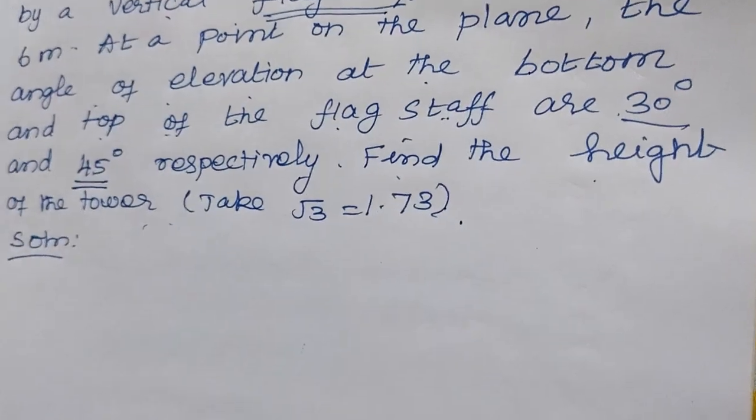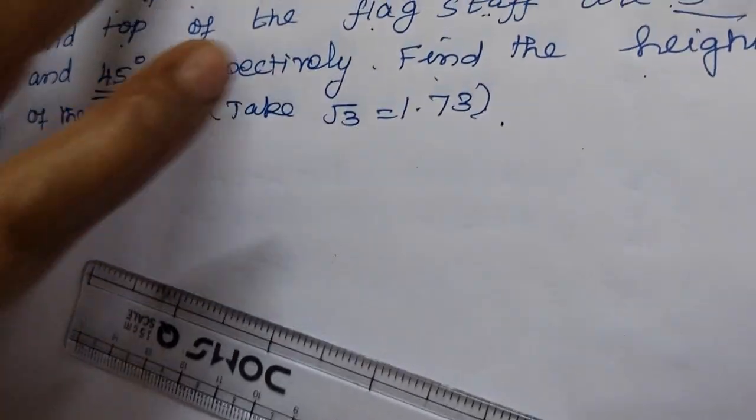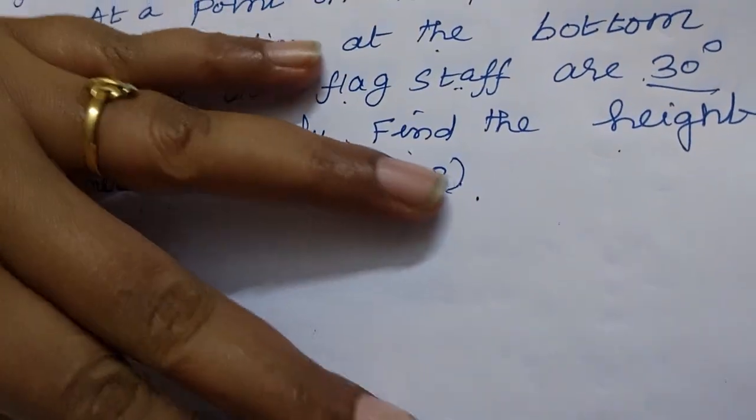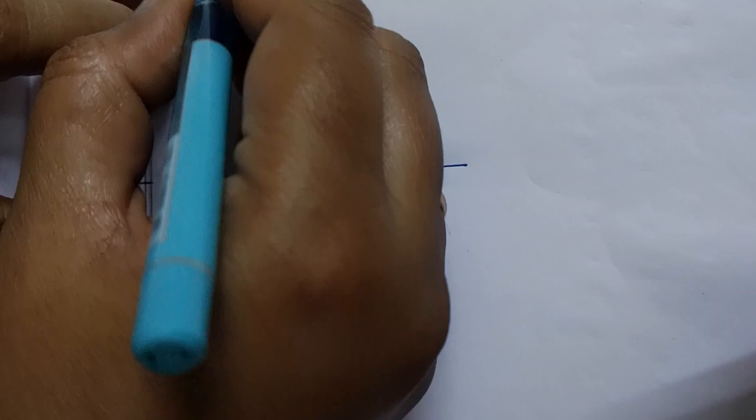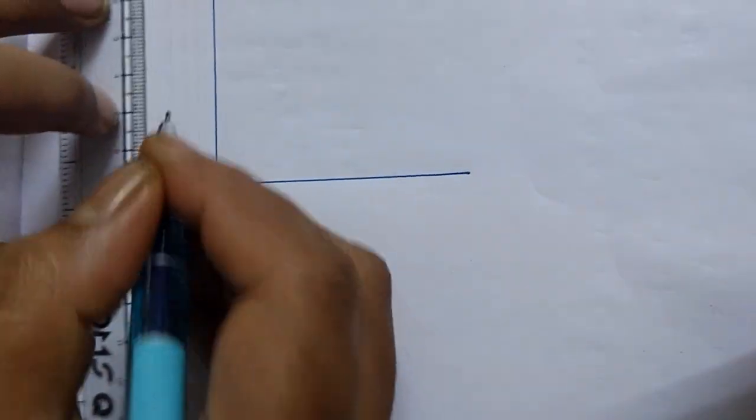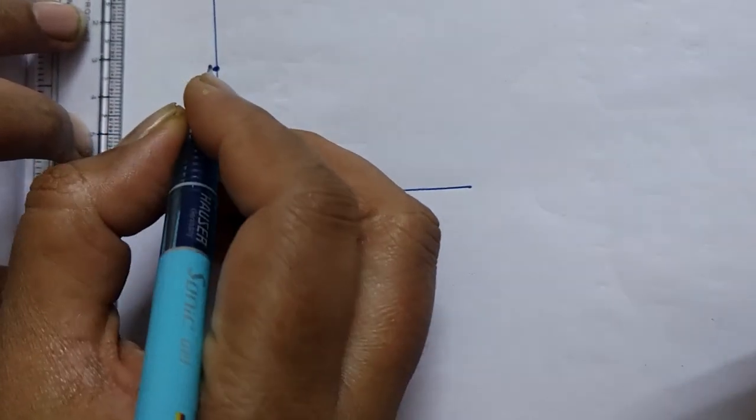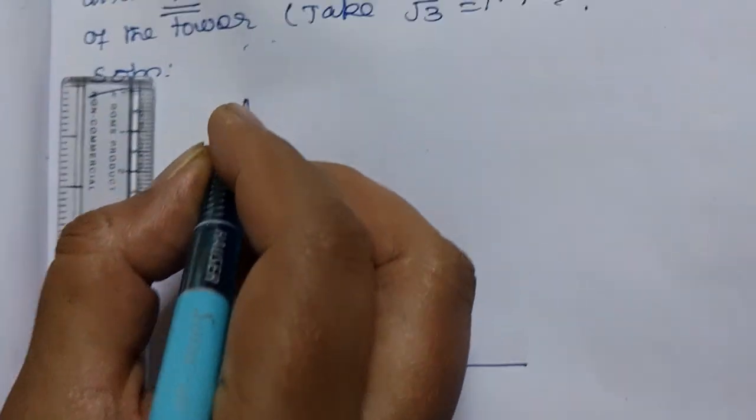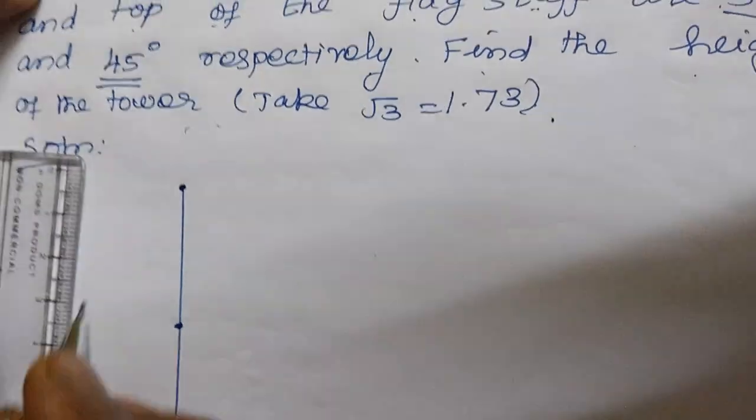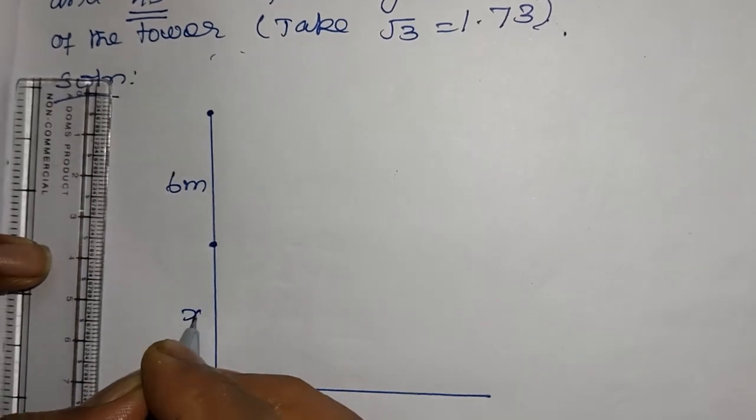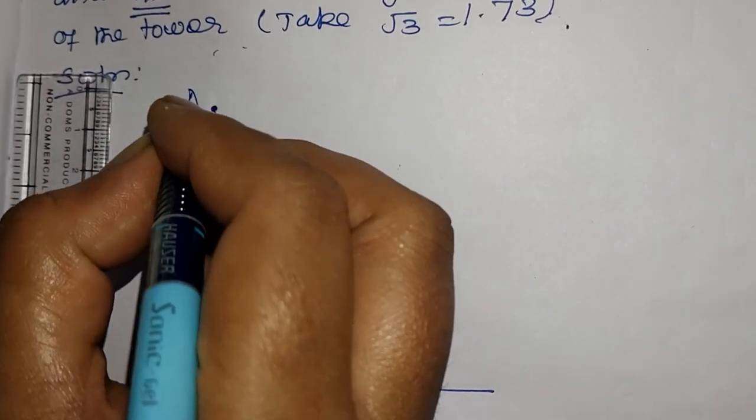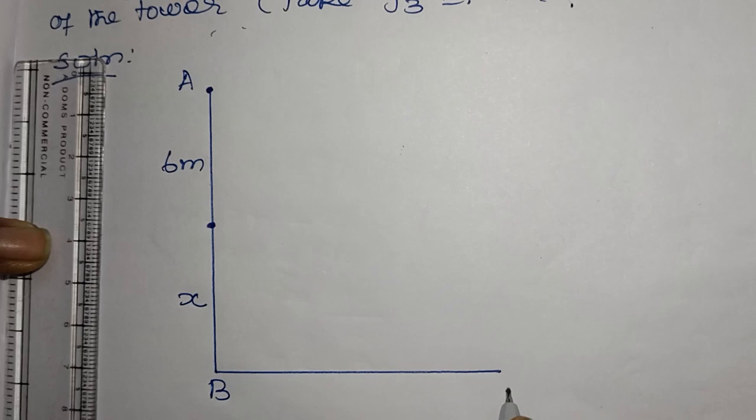So first, vertical tower stands on a horizontal plane. This is vertical tower and this is a flagstaff. Flagstaff is 6 meters height. So this one I would take it as X. So A, B, then C.